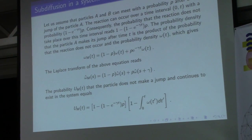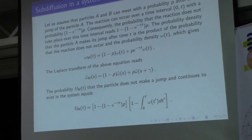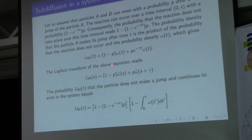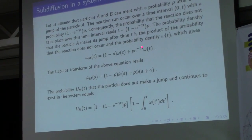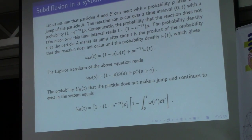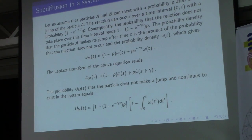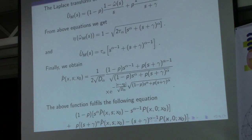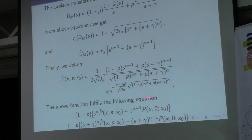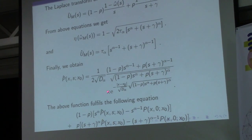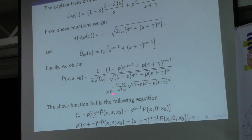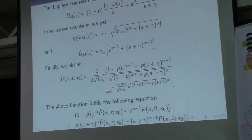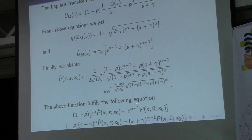So omega_M is the probability that the particle takes the next step at time t and continues to exist at that time. The Laplace transform of this quantity follows accordingly. After calculations, we get a rather complex Laplace transform of the probability density and a rather complex form of the differential equations.